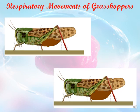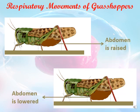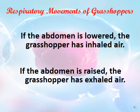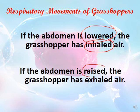Now let's talk about respiratory movements in insects, using the grasshopper as an example. In the first figure the abdomen is raised, and in the second figure the abdomen is lowered. During inhalation the abdomen is lowered, while during exhalation the abdomen is raised. So if the abdomen is lowered, the grasshopper has inhaled air; when the abdomen is raised, the grasshopper has exhaled air.